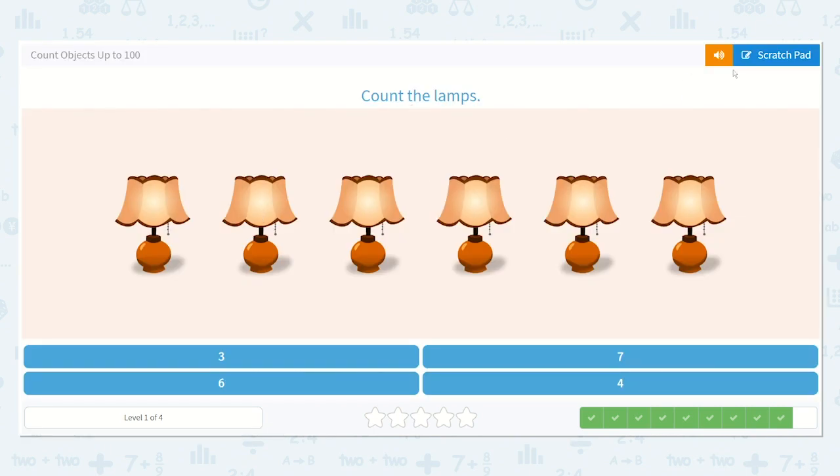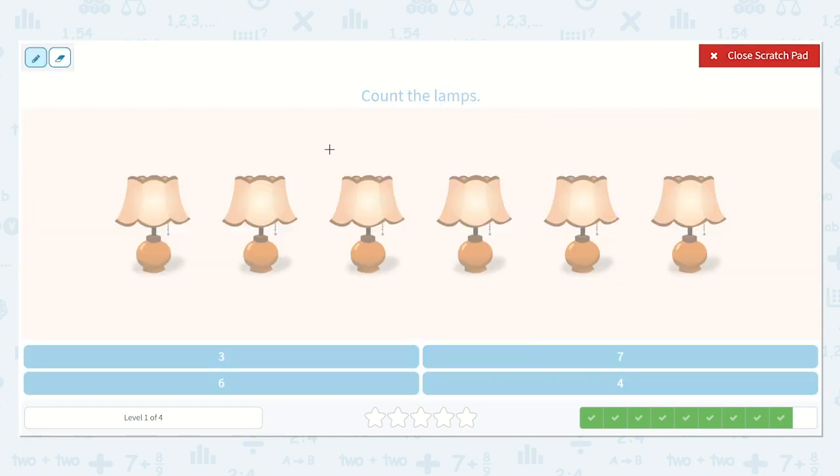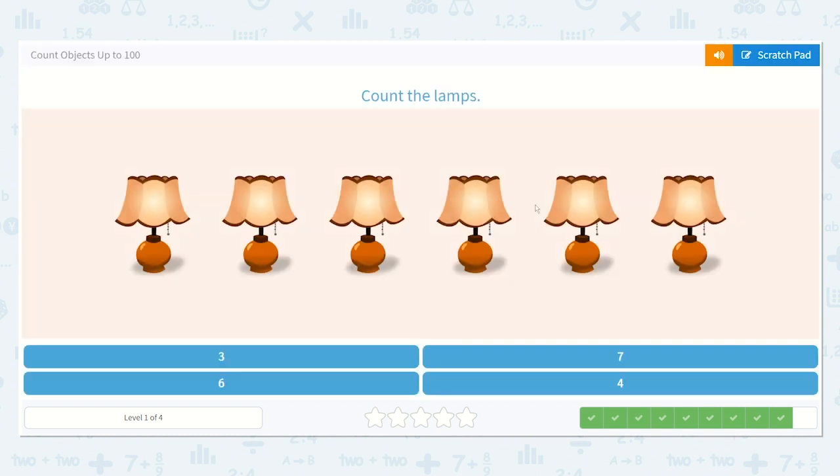All right, now let's count the lamps. Let's draw those lines under the lamps so we don't lose track. One, two, three, four, five, six. Wonderful. A six looks like this. Can you spot it down below? Yes, it's right here. All right, let's choose six.